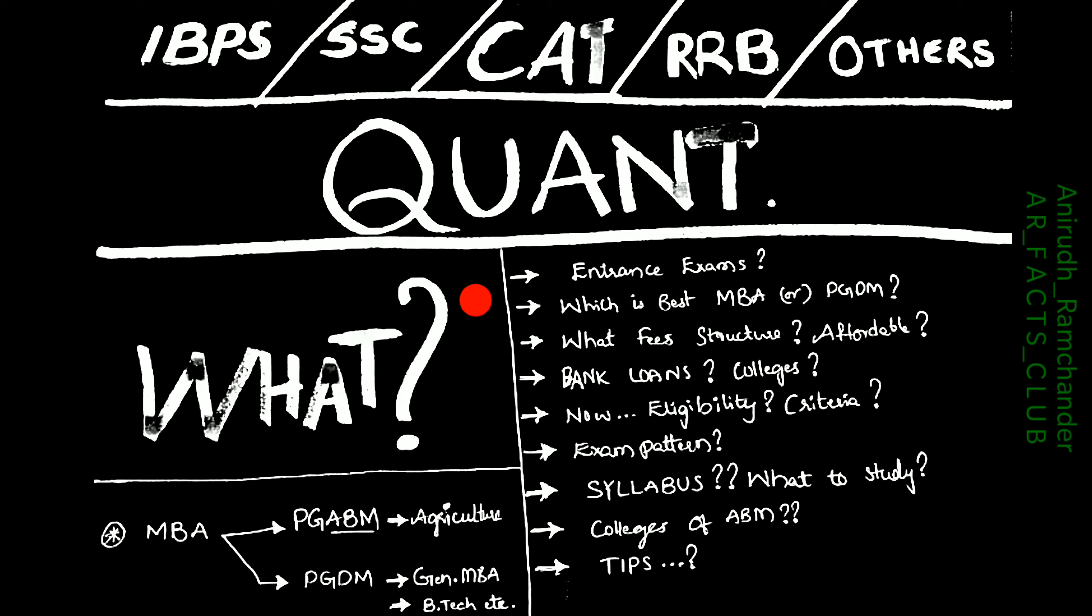The major questions which eat our brain when we think about CAT as a career are: what are the entrance exams, whether MBA is best or PGDM is best, what will be the fee structure, is it affordable, so majority of us drop here. And also we confuse about what are the bank loans, what are the colleges, the exam pattern, eligibility, criteria, syllabus, and tips.